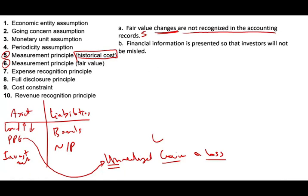Let's take a look at the second scenario: financial information is presented so that investors will not be misled. So we're not misleading investors. Is it economic entity? Is it going concern? Is it monetary? When you tell investors everything and don't mislead them, you are using the full disclosure principle. Full disclosure means telling investors as much information as possible so they know everything.